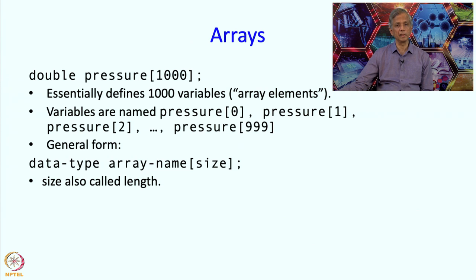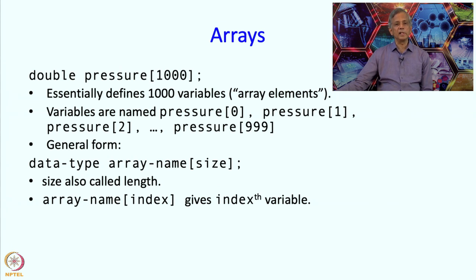In our previous example the data type was double, every element was of type double, the name of the entire array was pressure and it had 1000 elements. And the moment you say it has 1000 elements you are also saying that the numbering goes from 0 to 999. It is customary to say that array name[index] gives the index variable where index goes from 0 to 999 or in general index goes from 0 to size minus 1. Index has to be smaller than size.